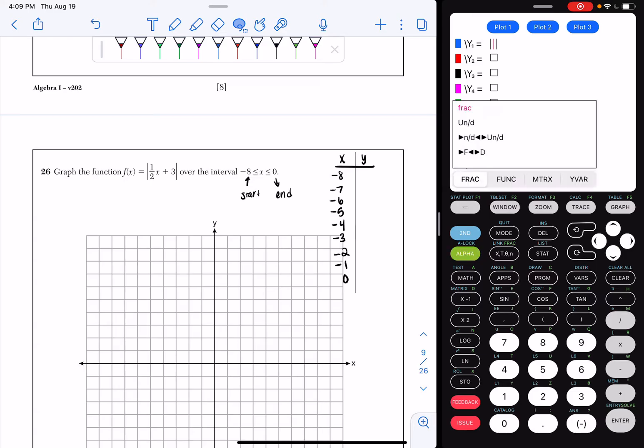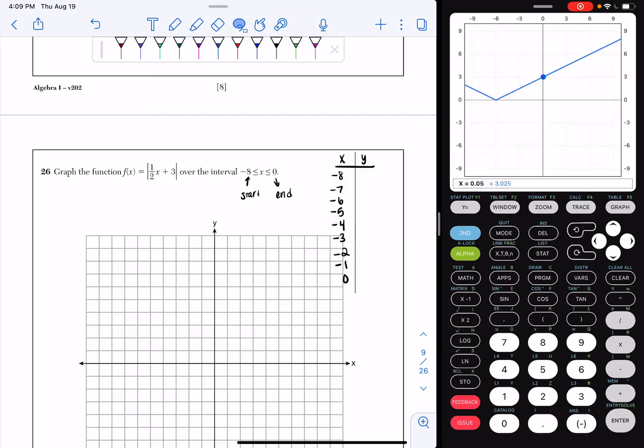We're now going to hit alpha y equals enter to make our 1/2, and we're going to make our x to the right of it, and then we're going to add 3. The first thing we're going to do is we're going to hit graph. Your graph should look somewhat like this, a V. If you look, it's a V shape.